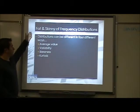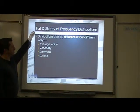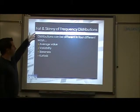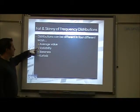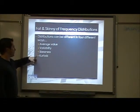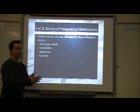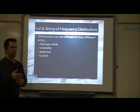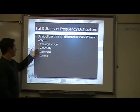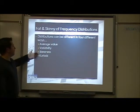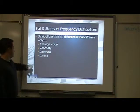Next, we're going to talk about different types of frequency distributions. Distributions can be different in four different ways: average value, variability, skewness, and kurtosis. We're not going to talk about kurtosis — it's a little bit more advanced than you'll need to get into. But these are the four different ways your data can be different.